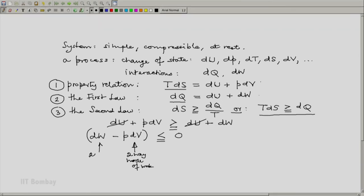This is two-way plus any one-way mode of work. And that means these two together, dW minus PdV, will give us the one-way mode of work.